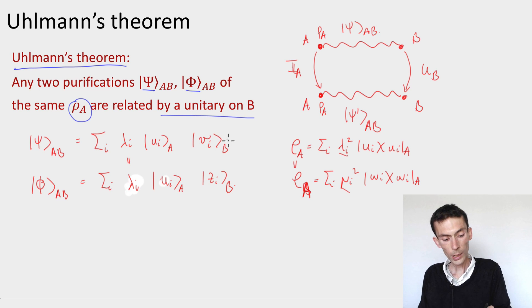And now the only remaining part is the part on the B system. And these need not be the same, because I don't know that the reduced densities on B are the same or not. They might be different.